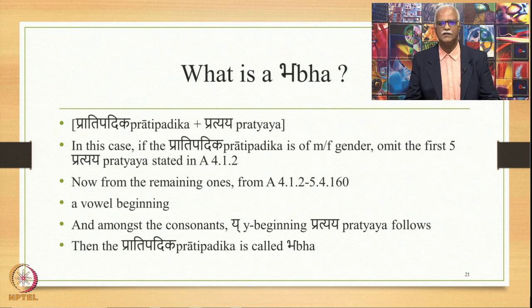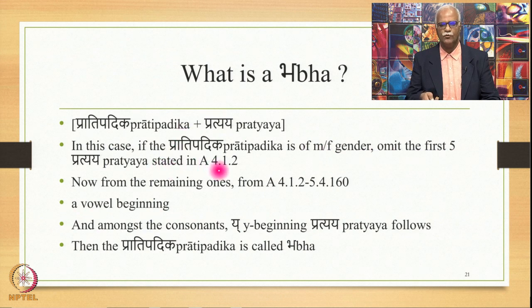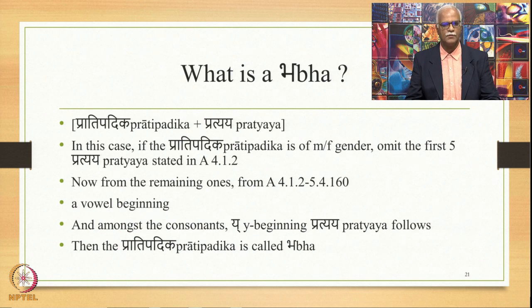The next technical term we study is Bha. Bha is in fact an Anga of a special kind. In the format Pratipadika + Pratyaya, if the Pratipadika is of masculine or feminine gender, omit the first five Pratyayas stated in 4.1.2. From the remaining ones, from 4.1.2 up to 5.4.160, if a vowel-beginning or Y-beginning Pratyaya follows, then this Pratipadika is called Bha.